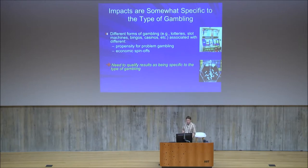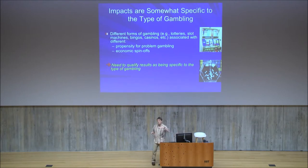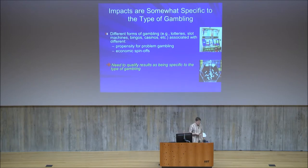Impacts are somewhat specific to the type of gambling — different forms have different propensity for problem gambling and different amounts of economic spin-offs. Horse racing has a large chain of farmers, breeders, etc., with many more jobs associated compared to electronic gambling machines, which often reduce employment because they're an automated device. Similarly, lotteries versus EGMs have different propensity for problem gambling. So you also need to qualify your results as being very specific to the type of gambling.